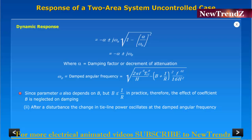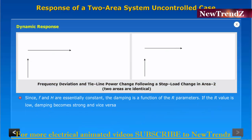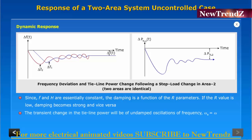After a disturbance, the change in tie-line power oscillates at the damped angular frequency. Damping of the tie-line power variation is strongly dependent upon the parameter alpha, which is equal to f0 by 4H. Since f and H are essentially constant, the damping is a function of the R parameter. If the R value is low, damping becomes strong and vice versa.